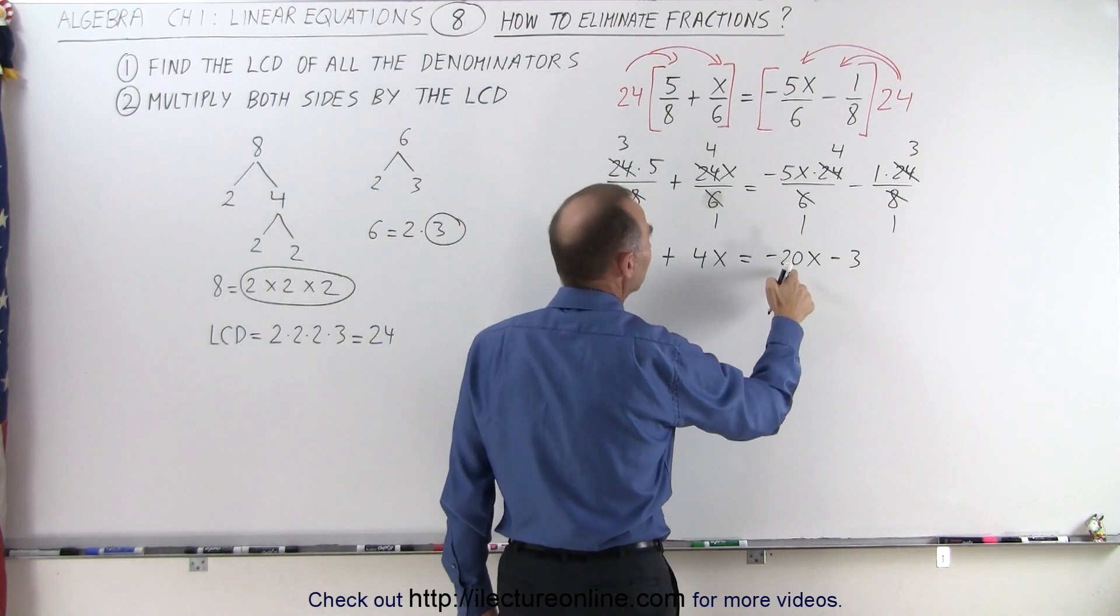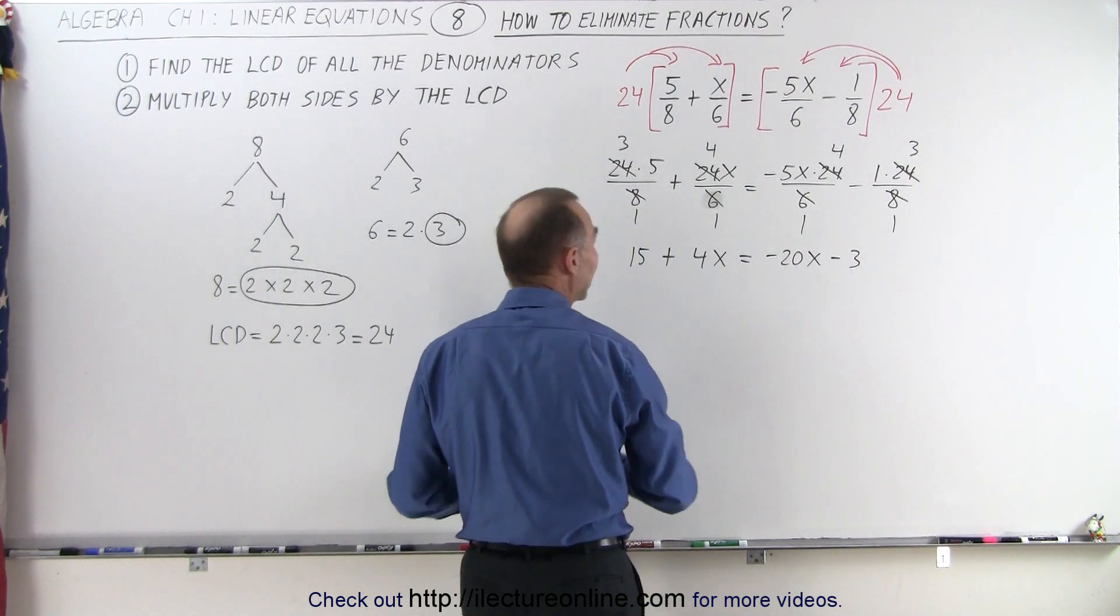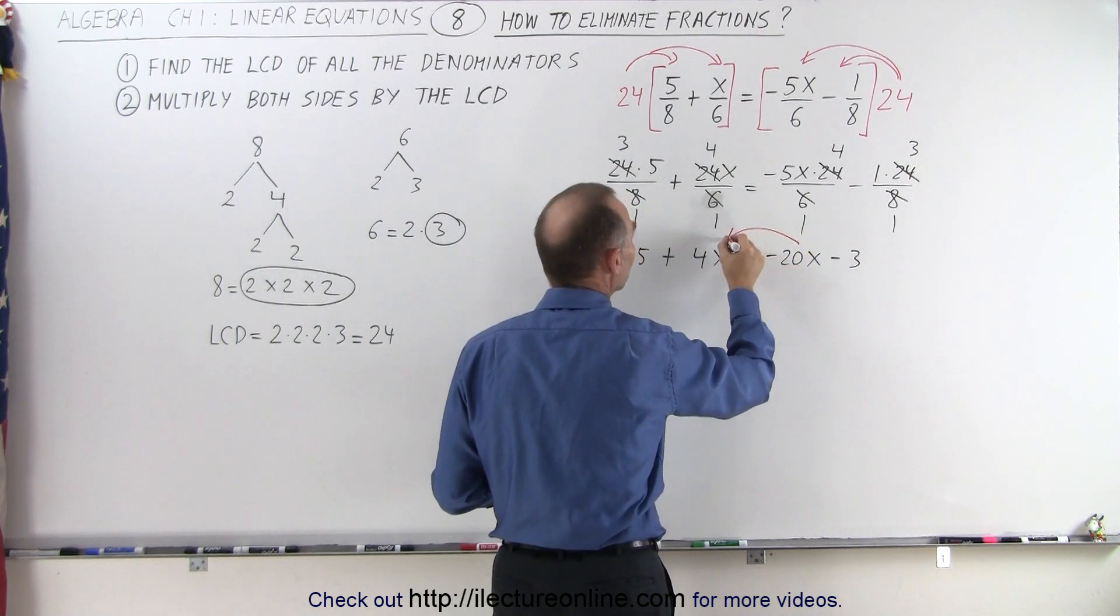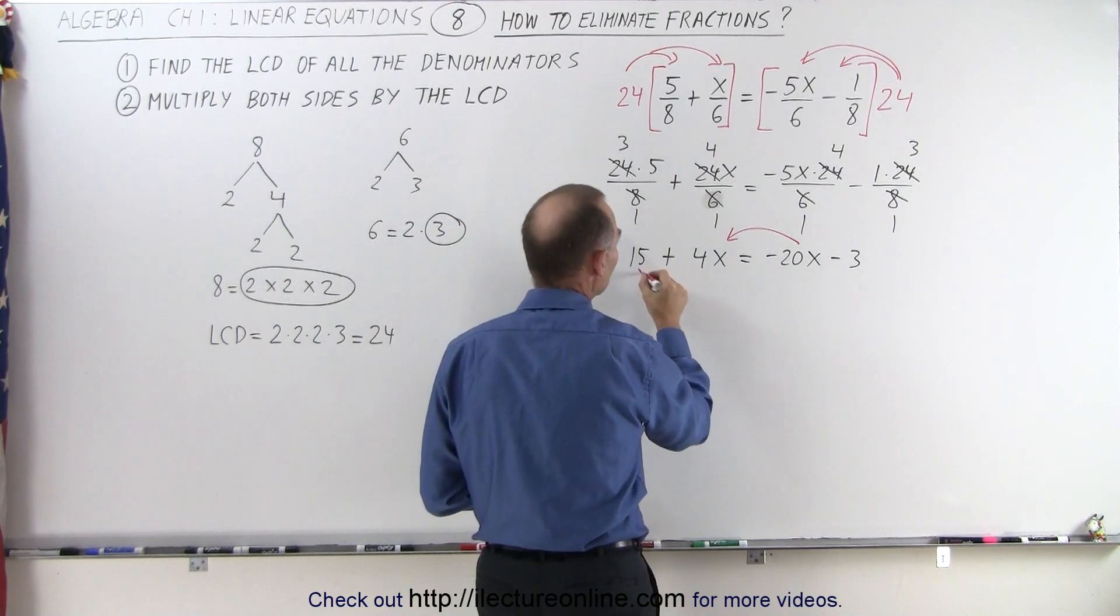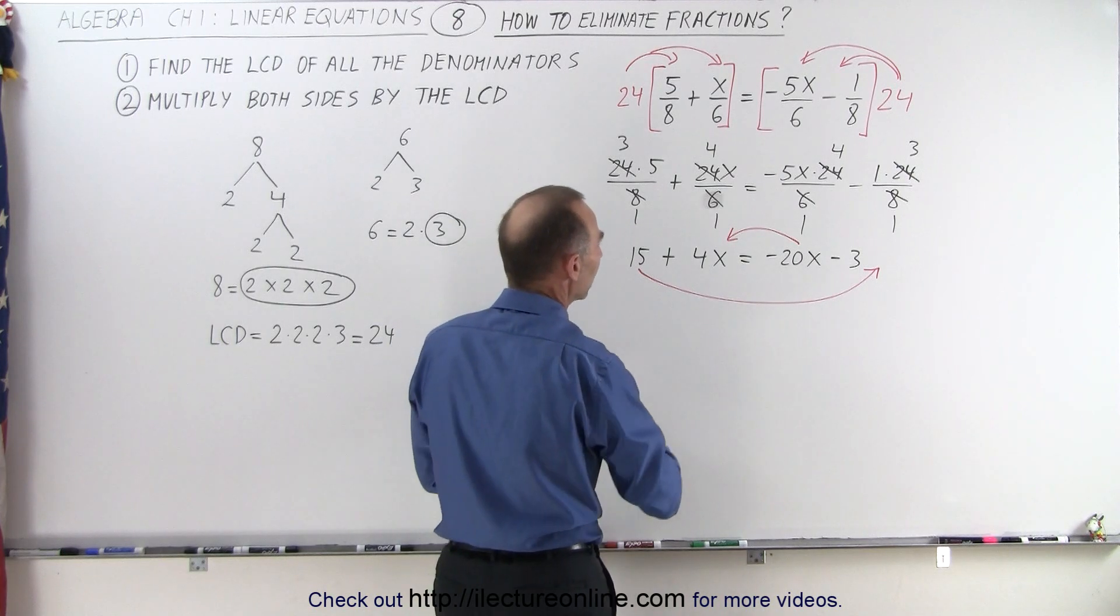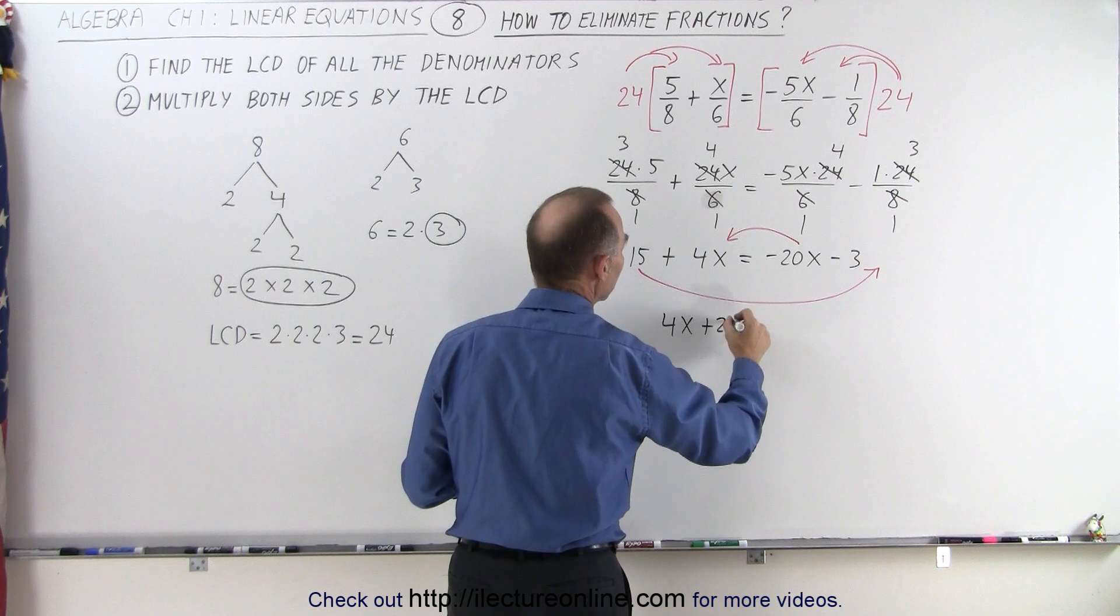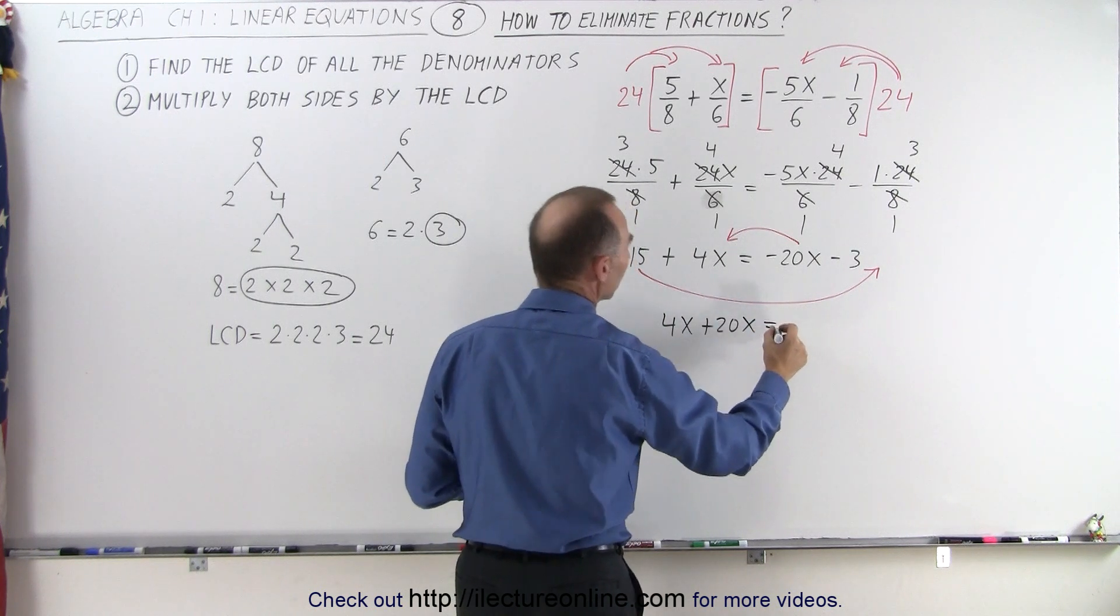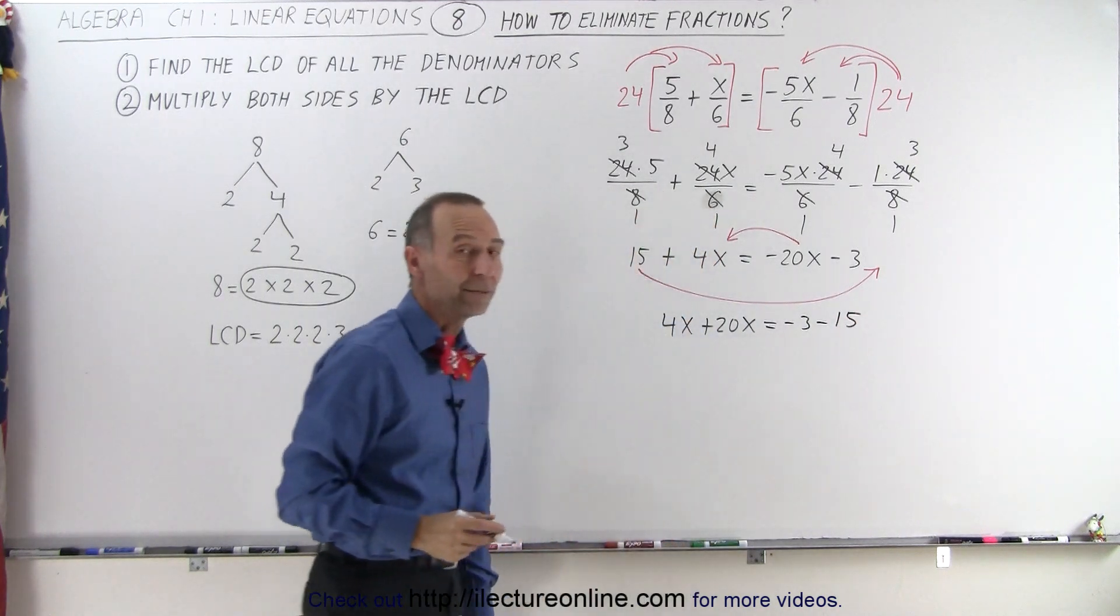We're going to move all the terms with the x to one side. We're going to move the minus 20x to the left side, which becomes a positive 20x, and we're going to move the 15 to the right side, which becomes minus 15.